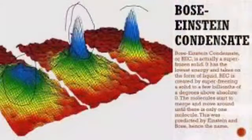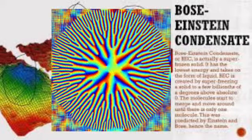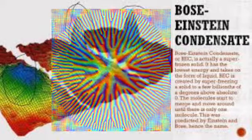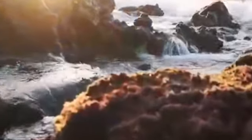Bose-Einstein condensation also applies to quasi-particles and solids. Magnons, excitons, and polaritons have integer spin, which means they are bosons that can form condensates.